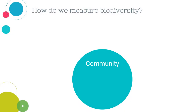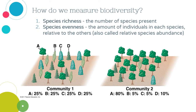Now we're going to look at how we measure biodiversity. The first approach is community level. These are measurements we've already covered in our ecology segment: species richness — the number of species present — and species evenness — how evenly those species are distributed in their abundance. Each of the two communities shown here has the same species richness, but completely different species evenness: community one has high, completely even distribution, while community two has a dominant tree species and then a few rare species.